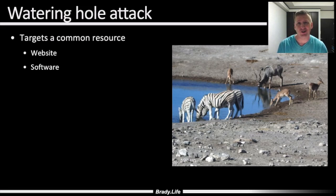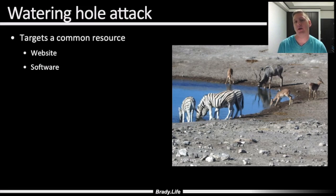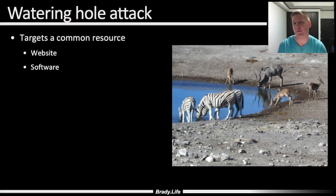A watering hole attack targets a shared resource. If the malicious actor is unable to gain access to a target directly, they let the target come to them. This is named after watering holes that form in Africa during the hot winter months as the lakes and riverbeds dry up.